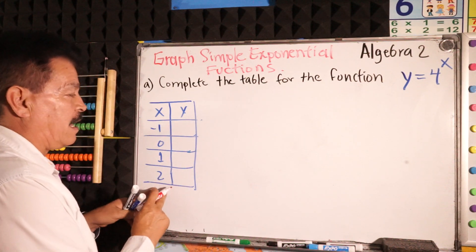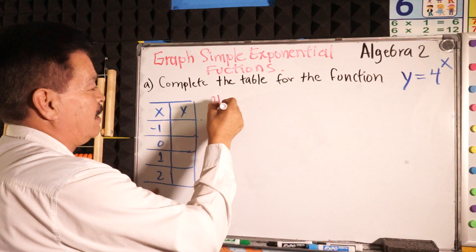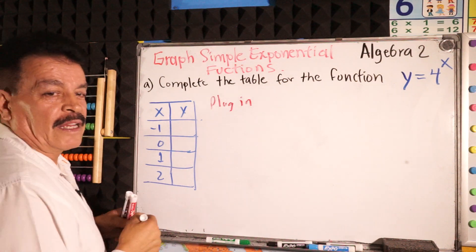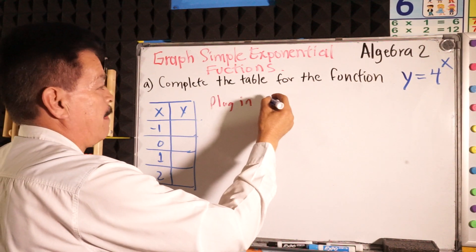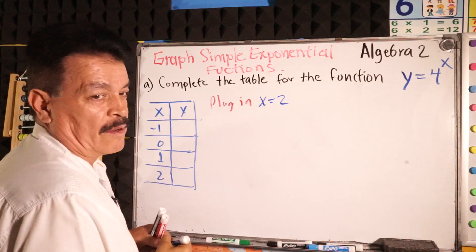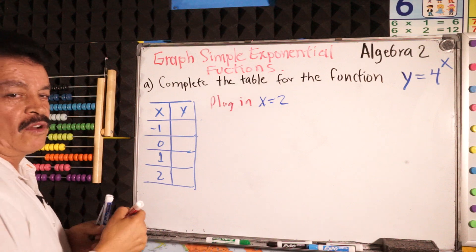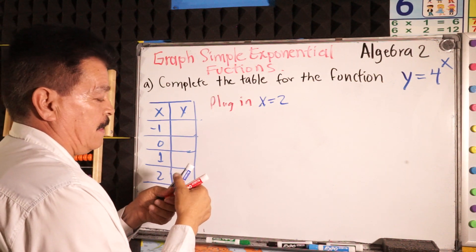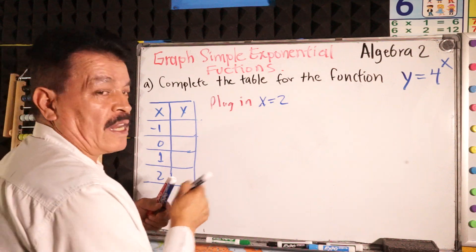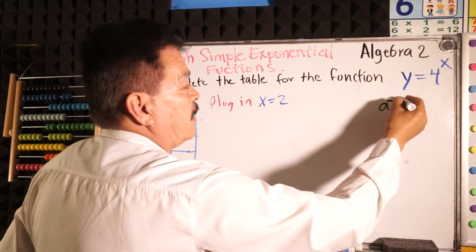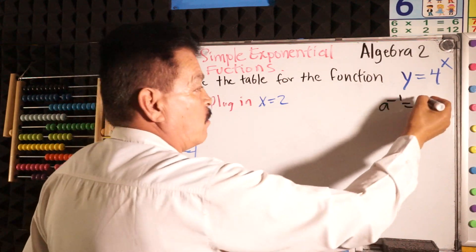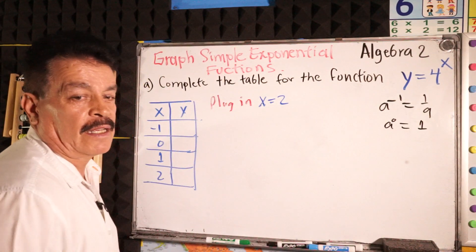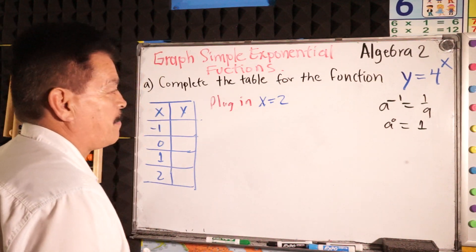Let's plug in x equals 2. Remember, we have to remember some rules: a to the negative 1 equals 1 over a, and a to the 0 equals 1. This is the kind of rule we have to remember — it's easy, it's not a problem.